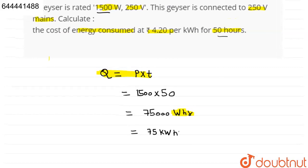So now we have found out 75 kilowatt hour is consumed. Now we have to find the cost.